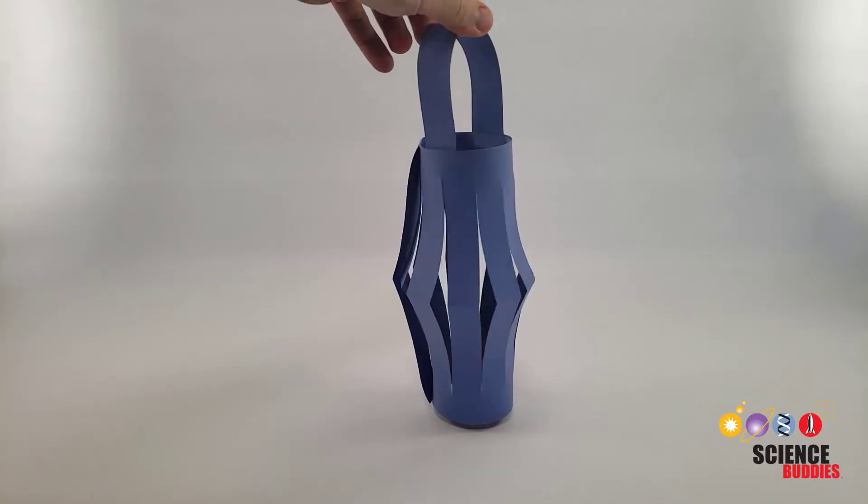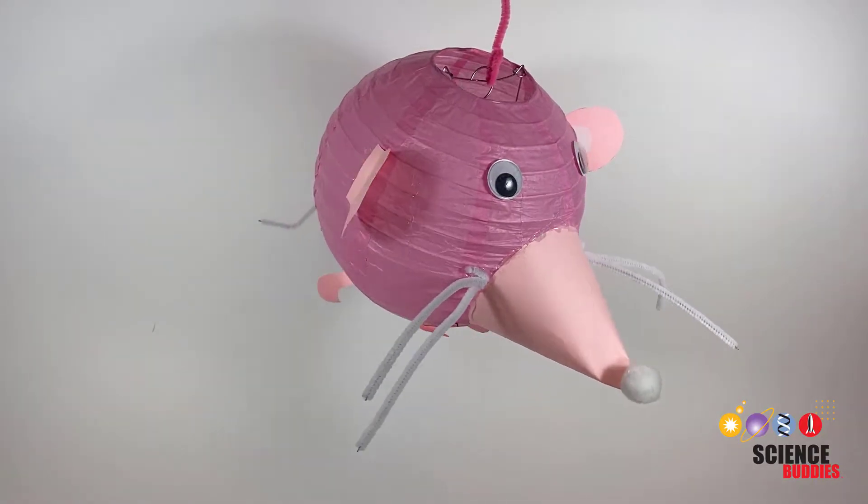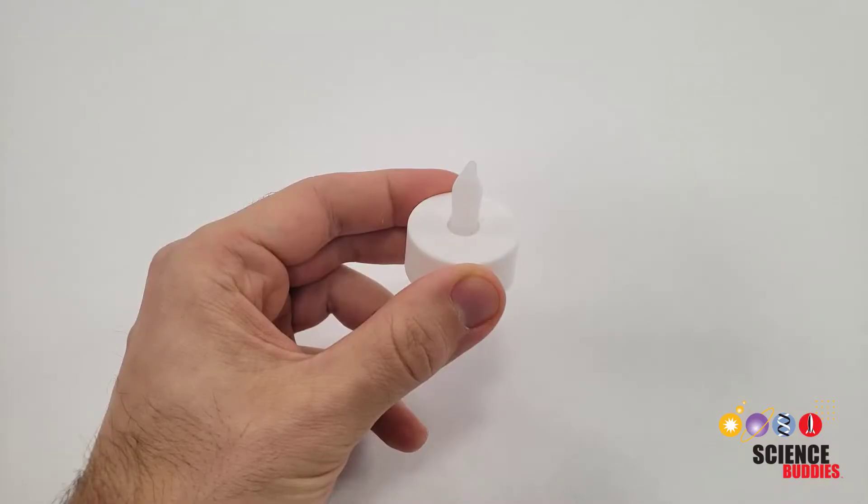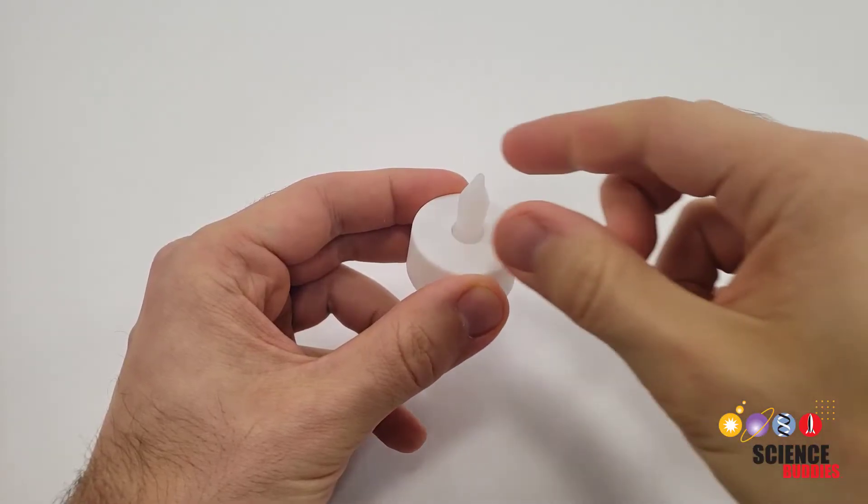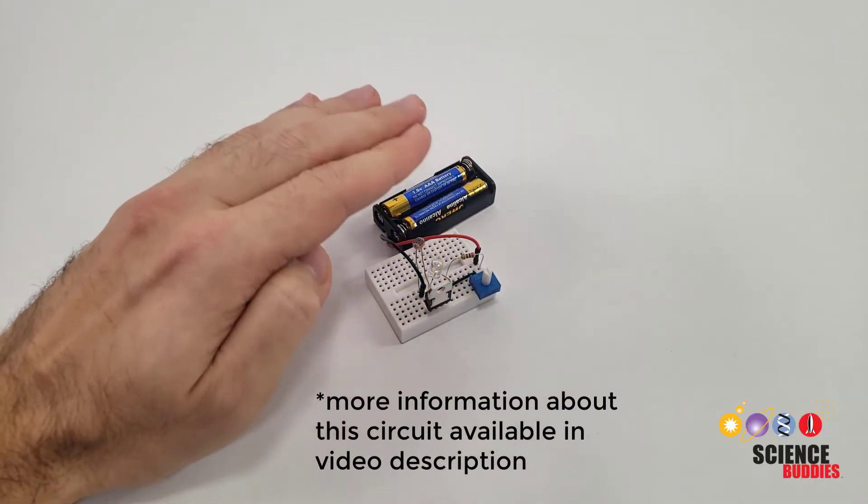For example, do you want your design to look like a traditional lantern or like an animal? What materials will you use to make your lantern? How will you light your lantern? Will you use a battery-operated T-light or a nightlight circuit that automatically turns on when it's dark?